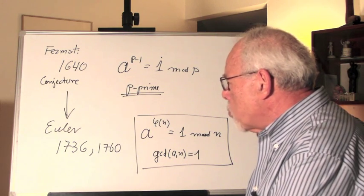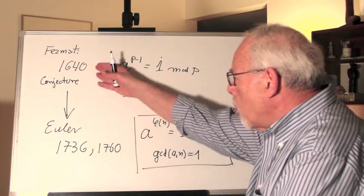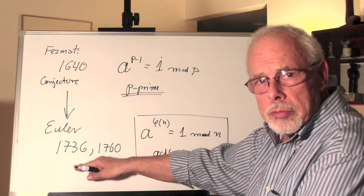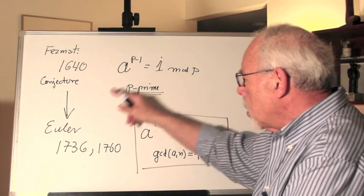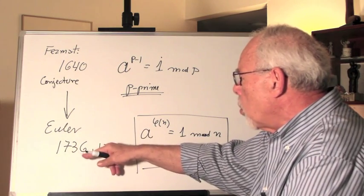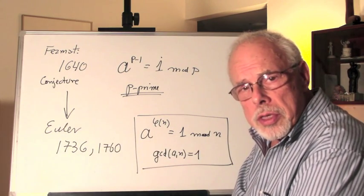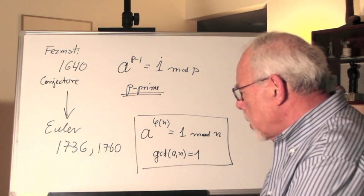Now what's interesting for us to know is that it took almost 100 years to prove it. It was the Swiss mathematician Euler who proved it in 1736, and then in 1760,